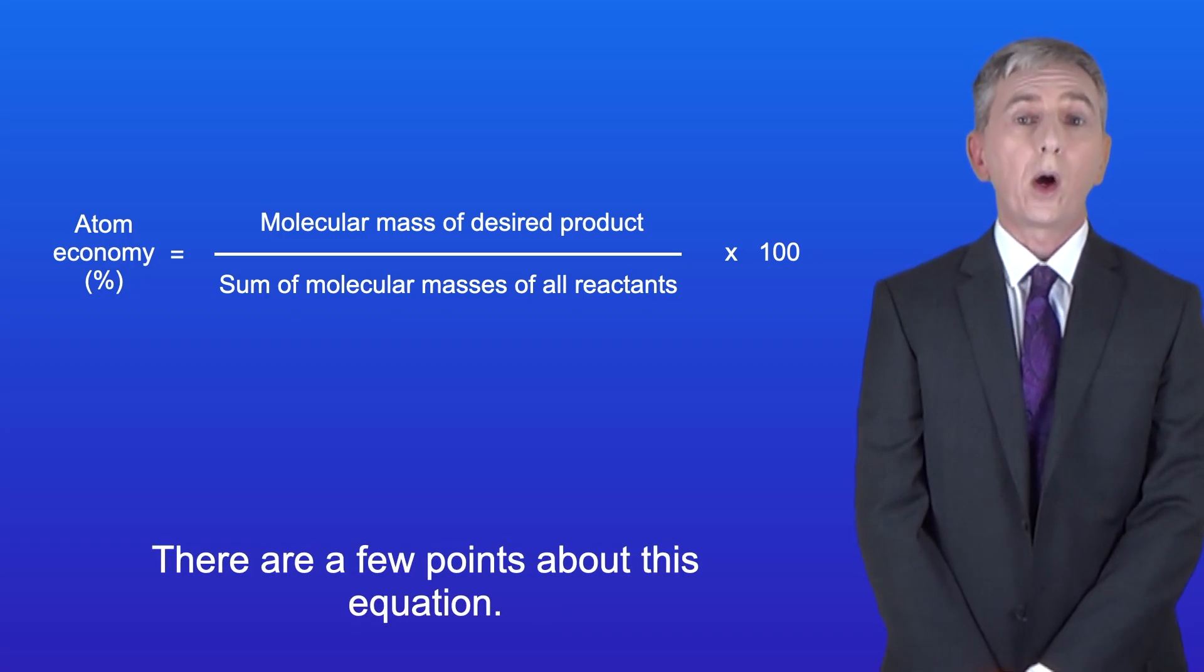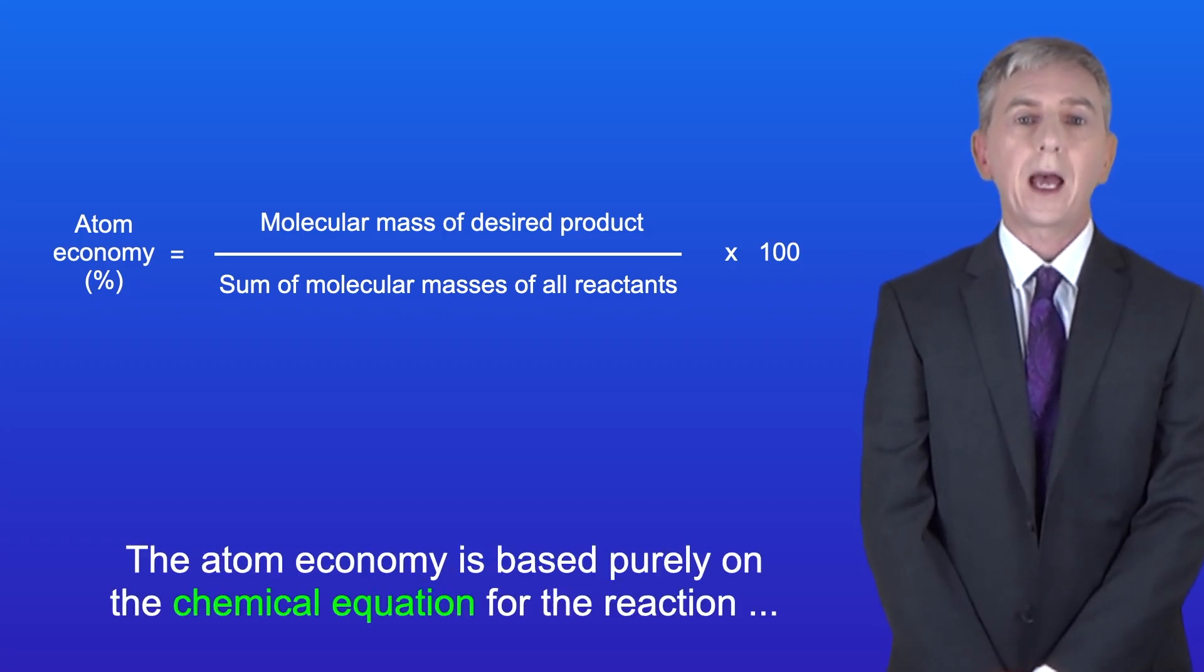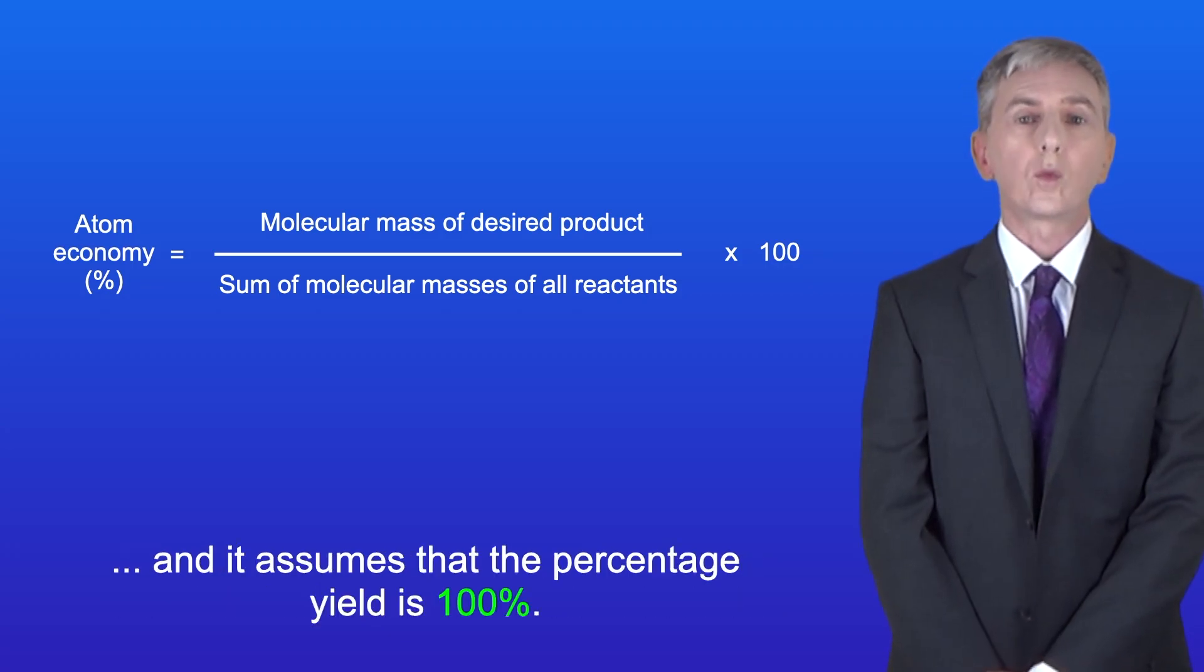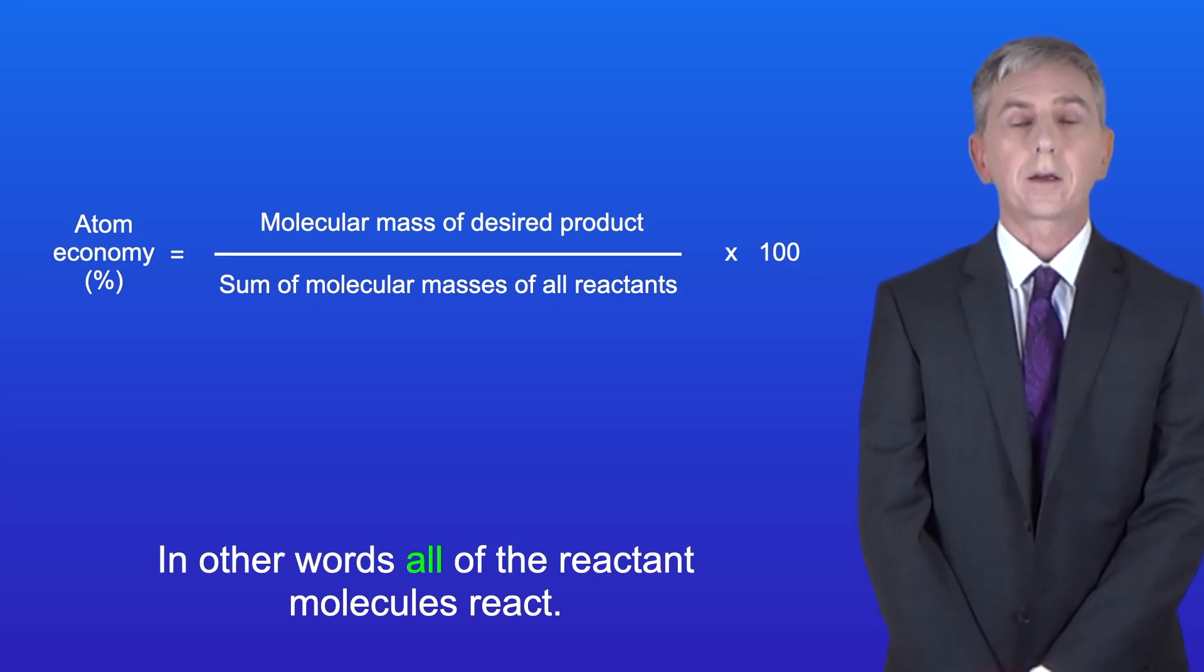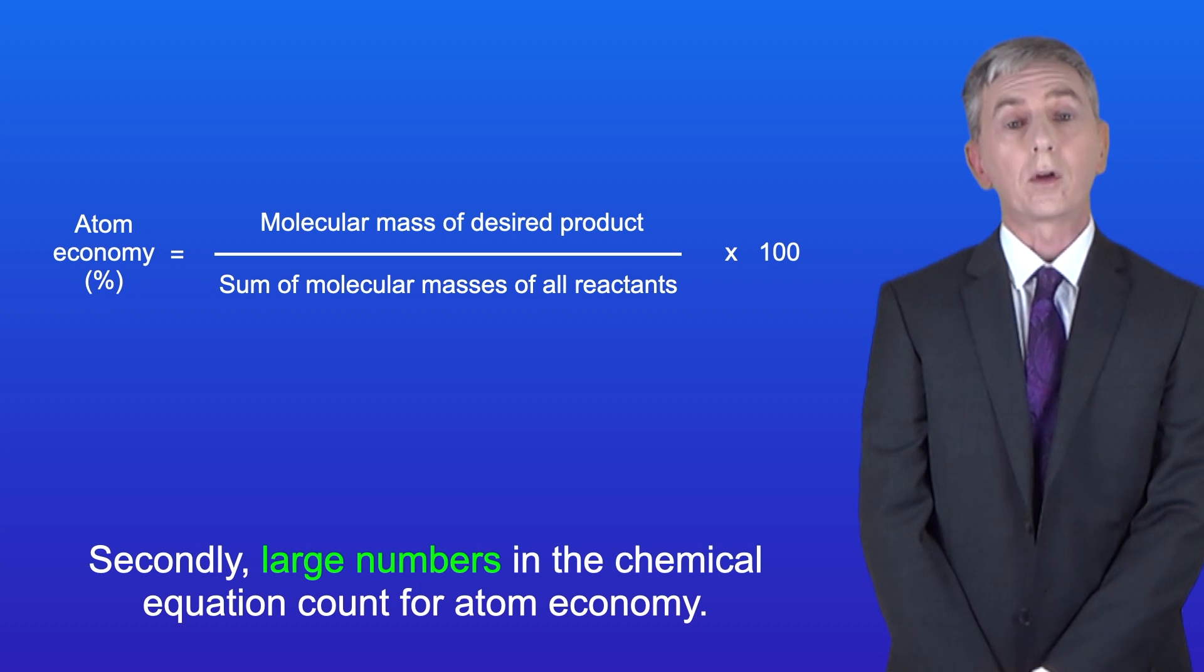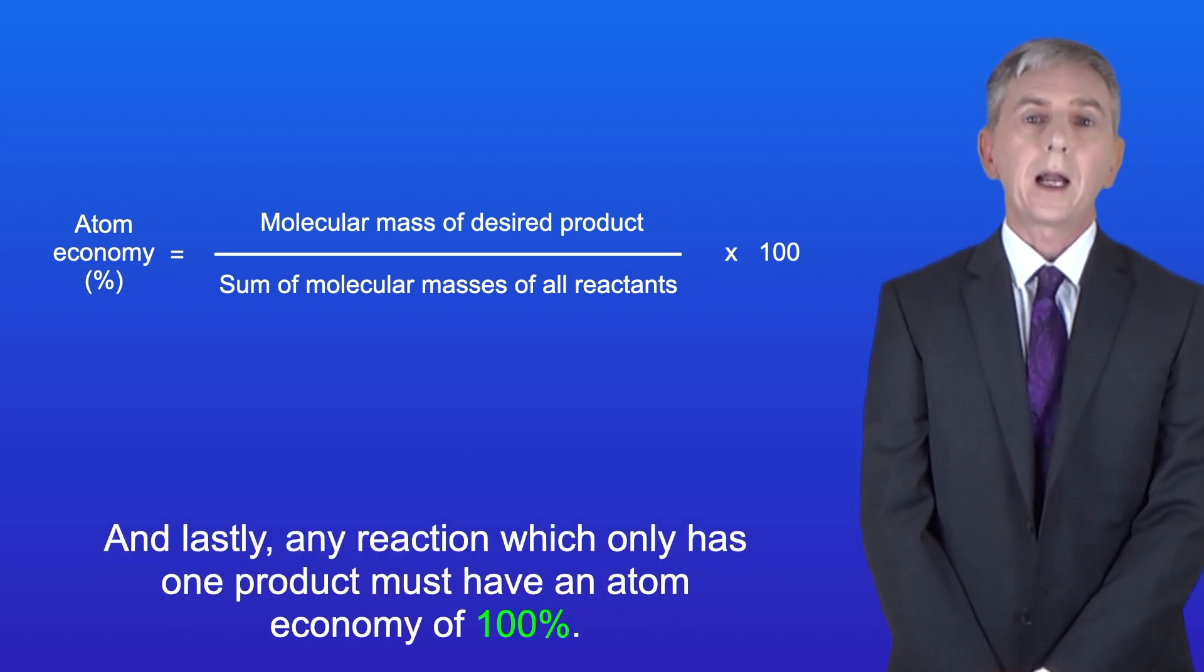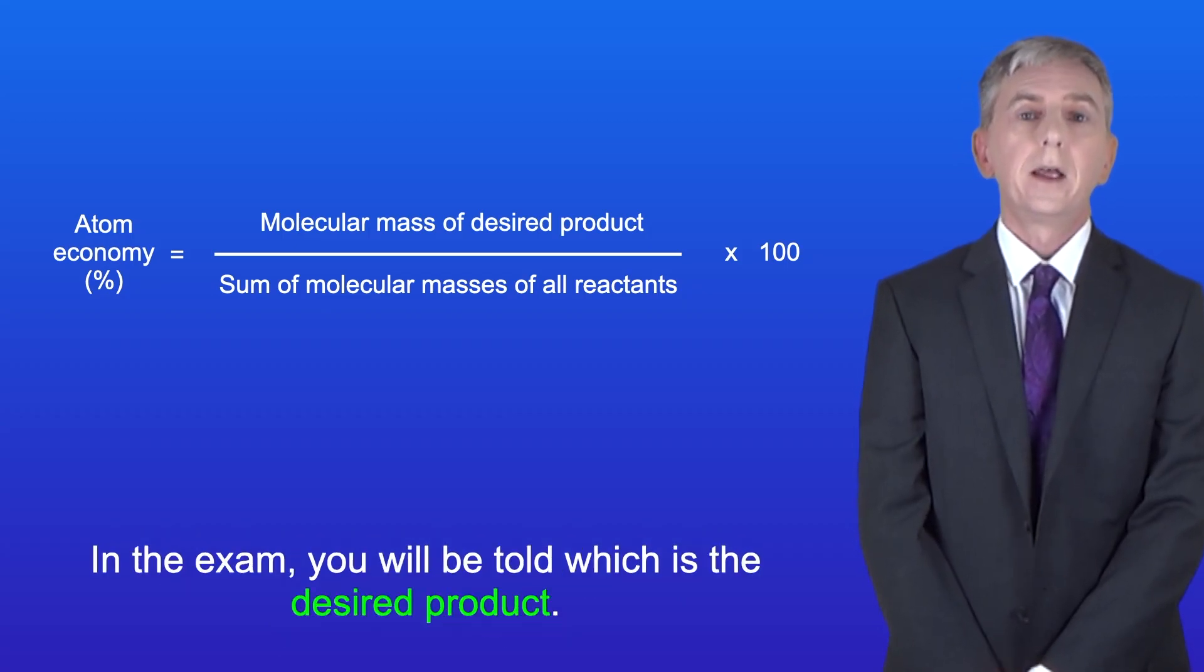Now there are a few points about this equation. The atom economy is based purely on the chemical equation for the reaction and it assumes that the percentage yield is 100 percent, in other words all of the reactant molecules react. Secondly large numbers in the chemical equation count for atom economy. And lastly any reaction which only has one product must have an atom economy of 100 percent and in the exam you will be told which is the desired product.